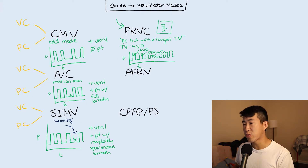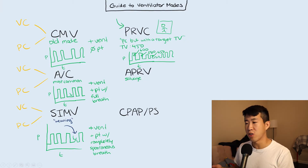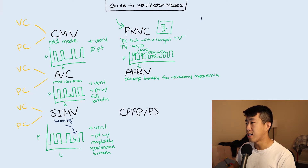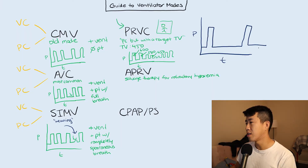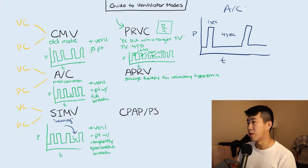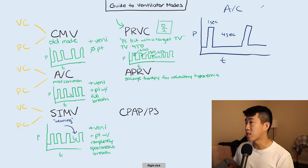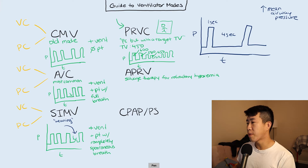APRV is an interesting one — this is airway pressure release ventilation. Basically, this is a salvage mode for refractory hypoxemia. So if a patient continues to be hypoxemic even though you've been up-titrating their settings a lot, this is a mode to consider. If we look at pressure over time in a normal assist control mode, you might have a breath lasting about one second followed by a four-second expiration. One way to improve oxygen saturations in refractory hypoxemia is by increasing the mean airway pressure — think of that as the area under the curve.